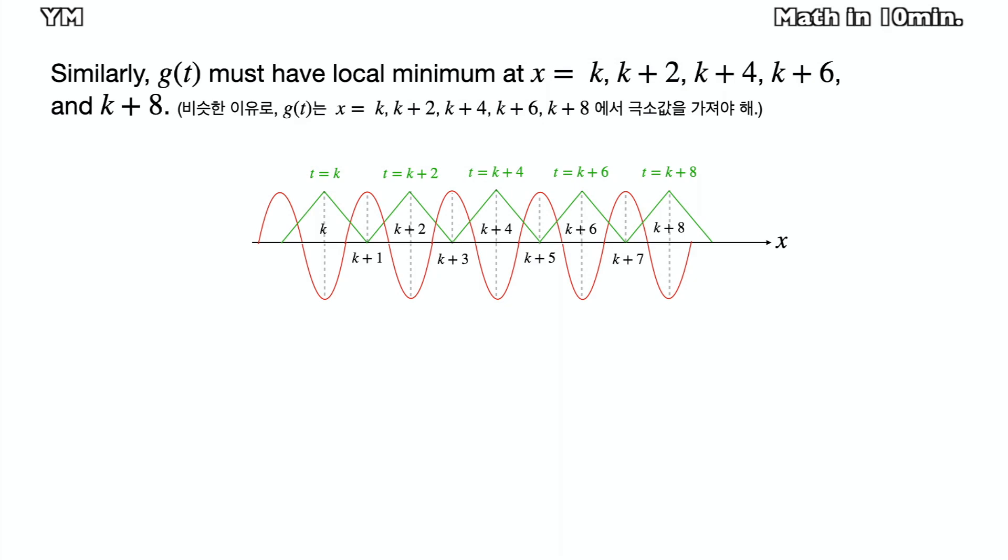Similarly, gt has local minimum where t equals k plus 2, k plus 4, and k plus 6, because the shape of cosine pi x is opposite on the intervals k plus 1, k plus 3.